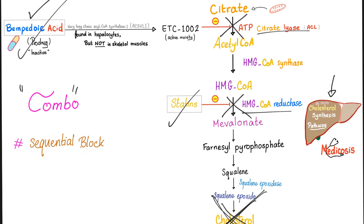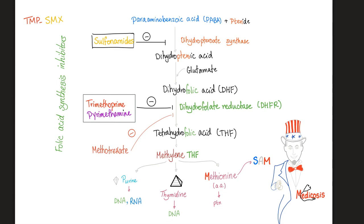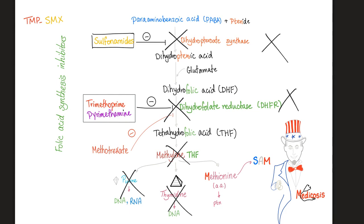Sequential block — have you heard of it before? TMP-SMX: trimethoprim and sulfamethoxazole (sulfonamide). Sulfonamides inhibit dihydropteroate synthase. TMP inhibits dihydrofolate reductase. This is a sequential block of the methylene THF pathway. Without methylene THF, there's no purine, no pyrimidine, and the bacteria is eliminated.